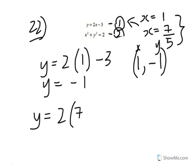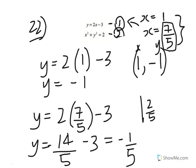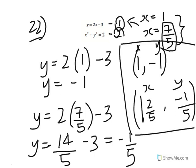The second solution: substitute x equals 7 over 5 into y equals 2x minus 3. You get y equals 14 over 5 minus 3, which equals negative 1 over 5. So the second solution is (1 and 2/5, −1/5). Those are your two coordinate solutions to the simultaneous equation.